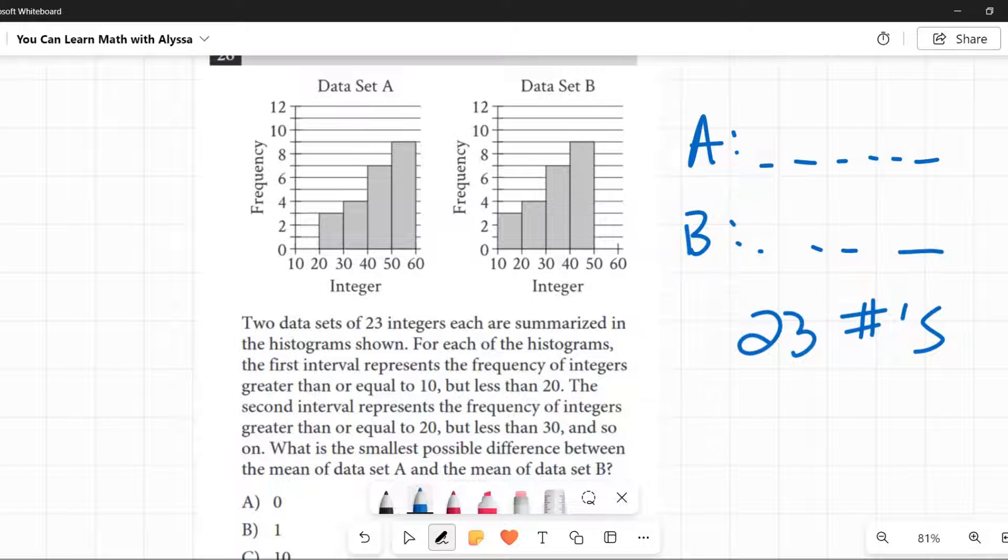But when they looked at B, they said, ah, there are three numbers in data set B that are between 10 and 19. And then they went on. The next one, how many numbers are there between 20 and 29? Okay, in data set A there are three of those, in data set B there are four of those. And they just kept going.